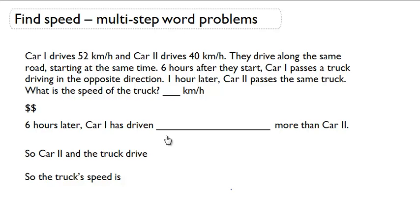Find Speed Multi-Step Word Problems. Car 1 drives 52 kilometers per hour and car 2 drives 40 kilometers per hour. They drive along the same road starting at the same time.